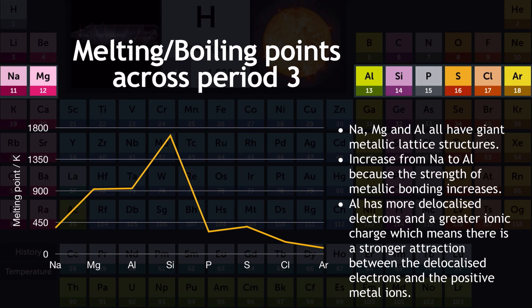Now we look at the melting and boiling point trend across period 3, using melting point data — boiling point data shows the same pattern. Starting with sodium, magnesium, and aluminium — our metals — they all have giant metallic lattice structures. There is an increase from sodium to aluminium because the strength of metallic bonding is increasing. Aluminium has more delocalized electrons and a greater ionic charge (Al³⁺ compared to Na⁺), meaning stronger attraction between the delocalized electrons and the positive metal cations in the giant metallic lattice.